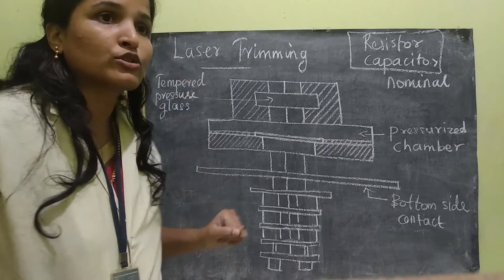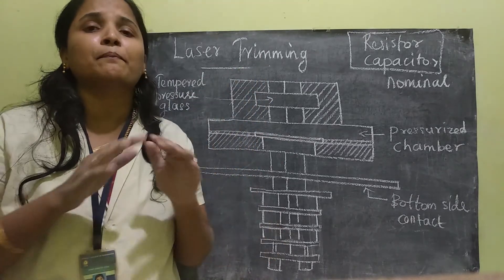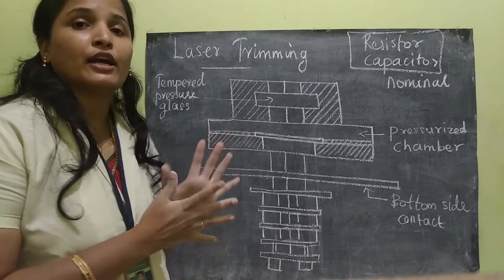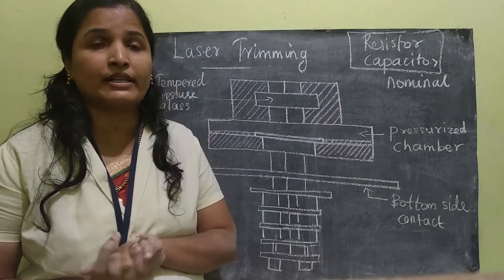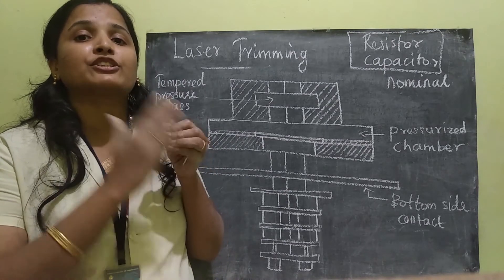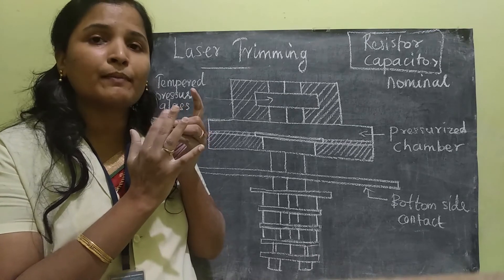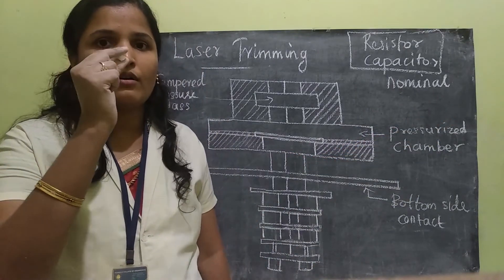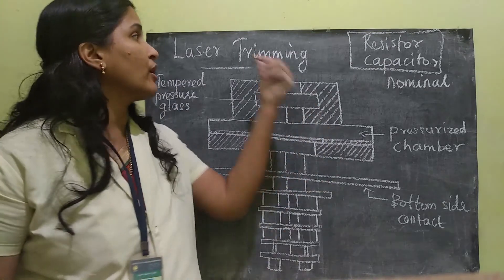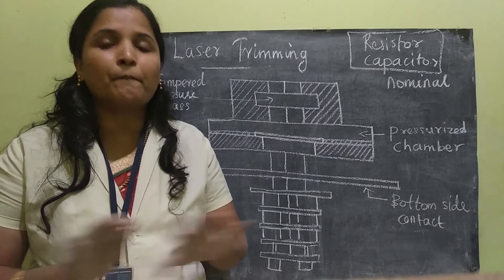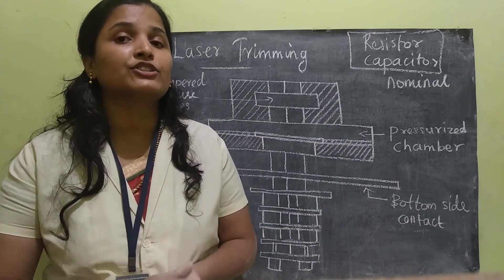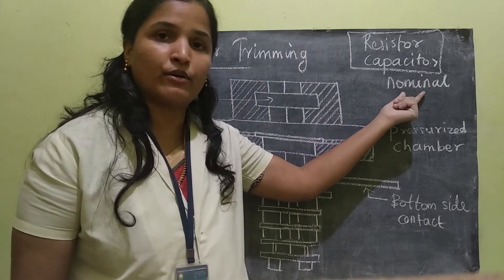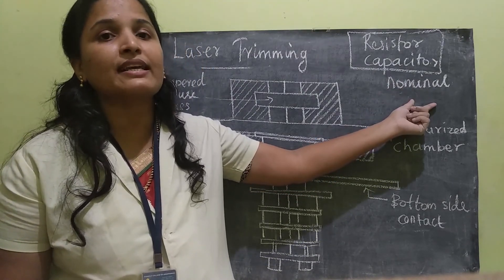The advantages of laser trimming are: first, it is completely clean. Previously, for achieving desired resistor value conventionally, they would just do mechanical abrasion — simply scratch the material and measure the resistance value to reach the nominal value. But now because of laser trimming, the process is completely clean, there is no mess. The second advantage is it is very accurate — whatever the required nominal value, it can be achieved with high accuracy.